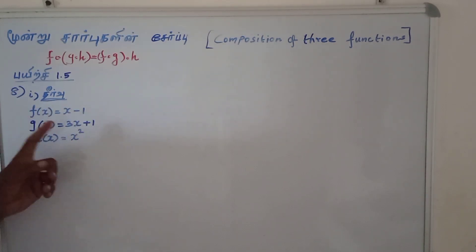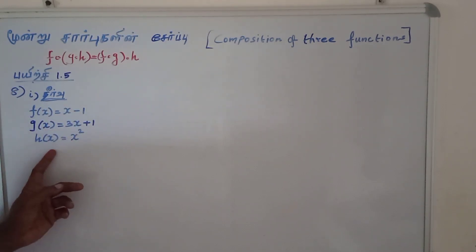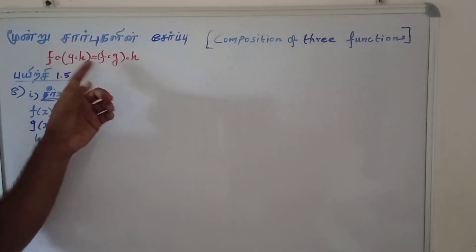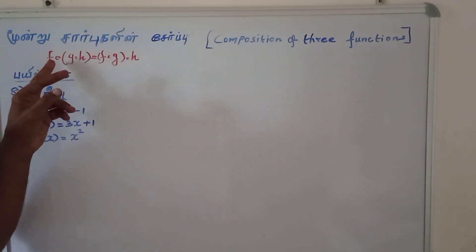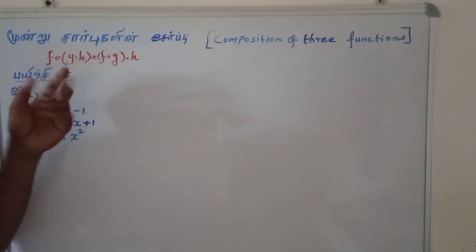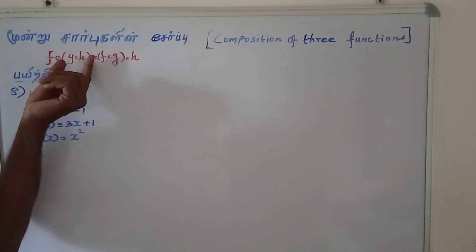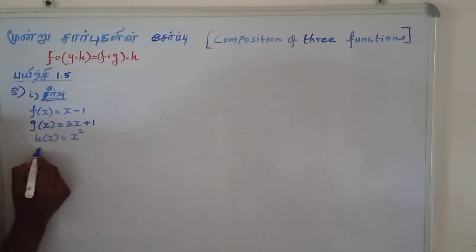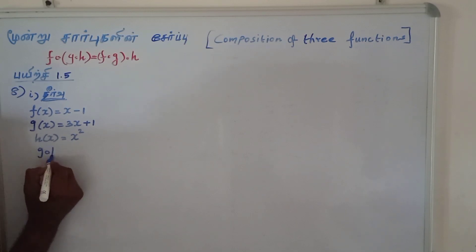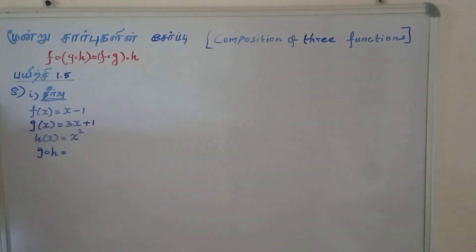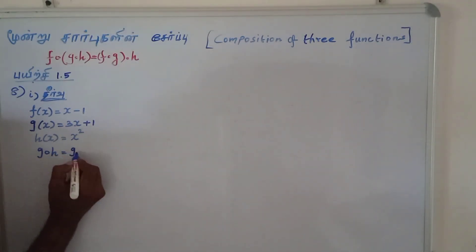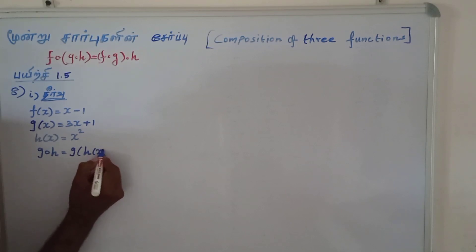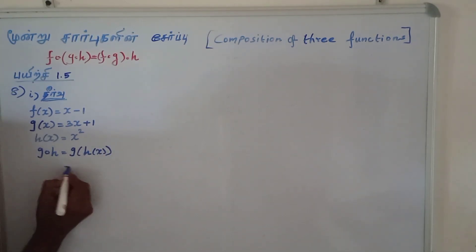Three functions: F of X, G of X, H of X. This is the same function — the bracket is the function which is the function of the function.